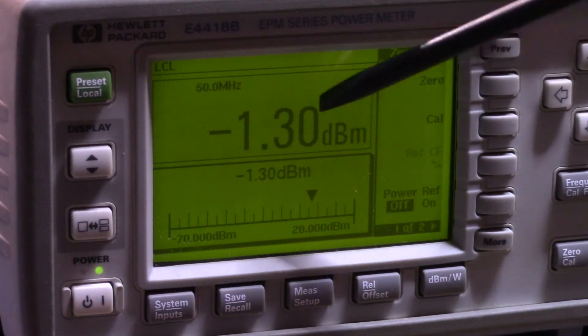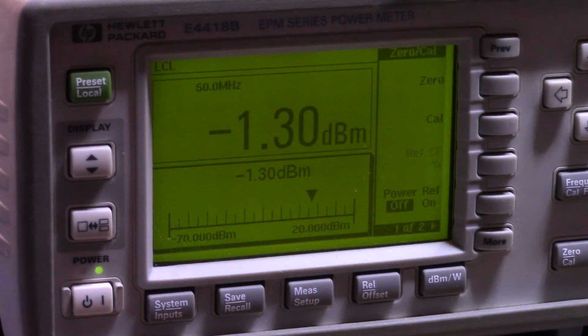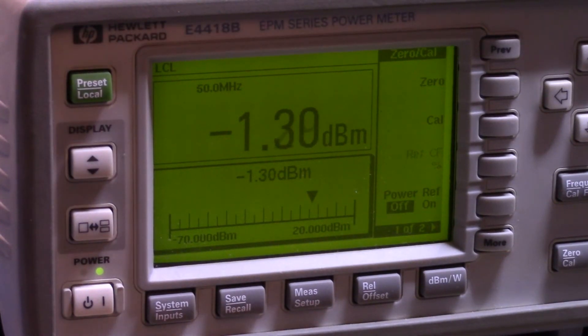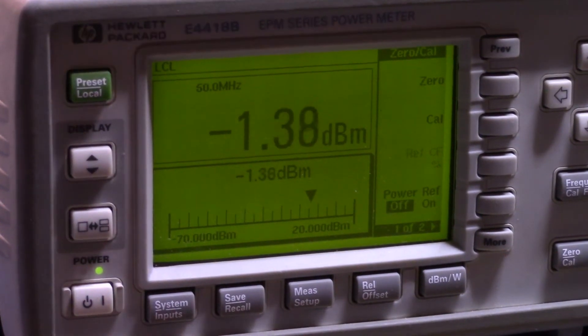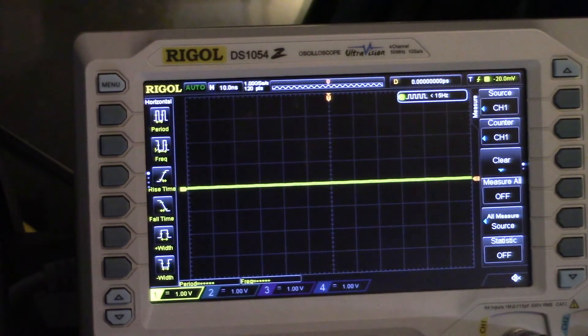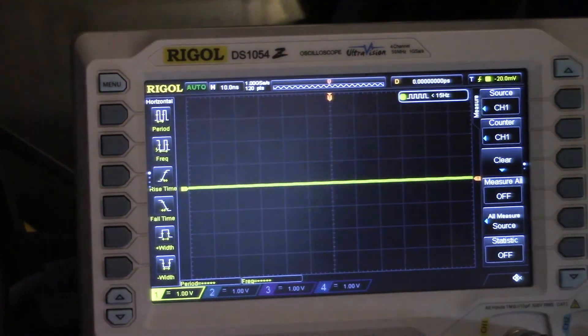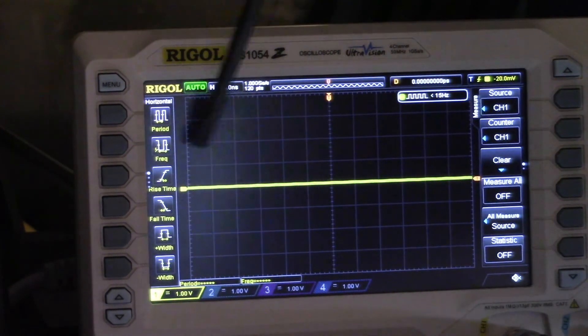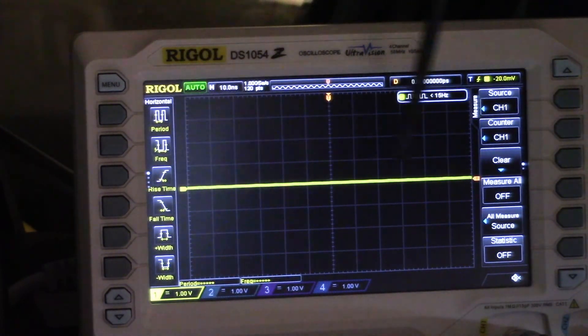So now if I turn channel one on, you'll see that we still say the same here and we haven't seen any change. But if we were to look on the oscilloscope, okay, so if we look at the oscilloscope though, what you'll notice is we're nice and flat here.